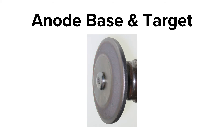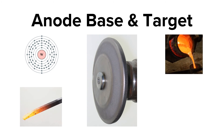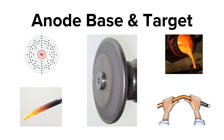Tungsten was chosen because of four main qualities. One is its high atomic number. Two, it is an effective thermal dissipator. Three, it has a high melting point. And four, it is very malleable, meaning it can bend easily.